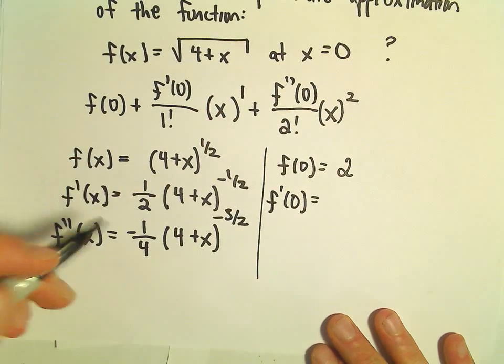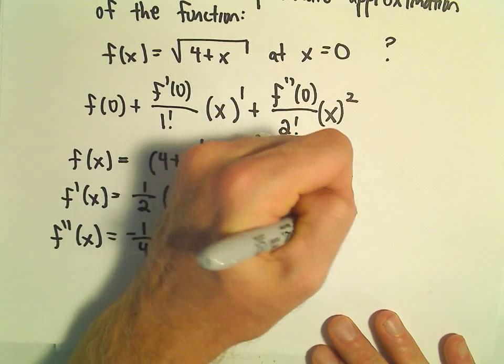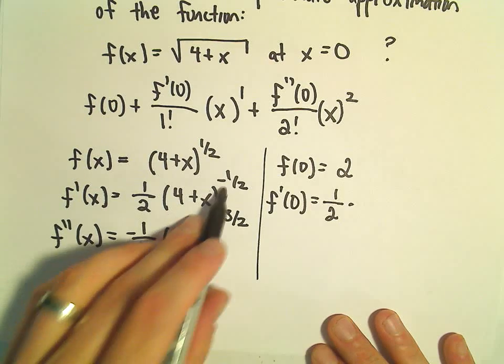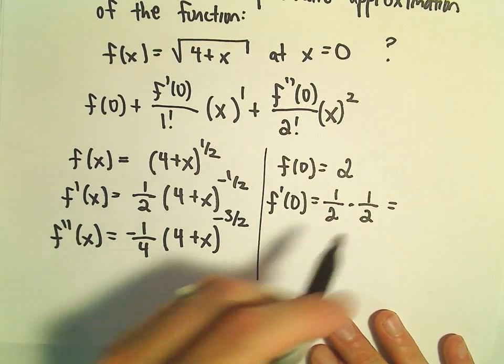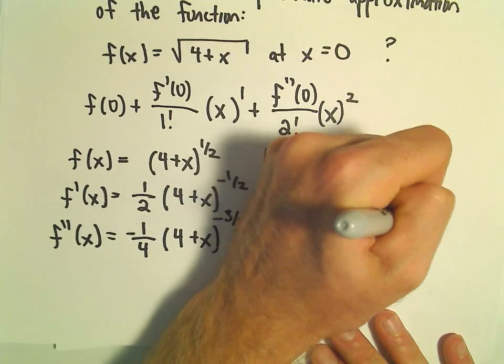f prime of 0, that's going to give us 1 half times 1 over 4 to the positive 1 half, which will be another 2 in the denominator. So that'll give us 1 fourth.